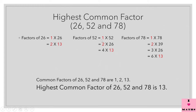Now factors of 52: 1 × 52 = 52, 2 × 26 = 52, 4 × 13 = 52. So the factors of 52 are 1, 2, 4, 13, 26 and 52. Now factors of 78: 1 × 78 = 78, 2 × 39 = 78, 3 × 26 = 78 and 6 × 13 = 78. So 1, 2, 3, 6, 13, 26, 39 and 78 are the factors of 78.